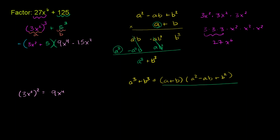And then finally, plus b squared. b is 5. So it's going to be 5 squared. So plus 25. And when I say b, this is b, not the whole 5 to the third. And when I say a, just this part is a.